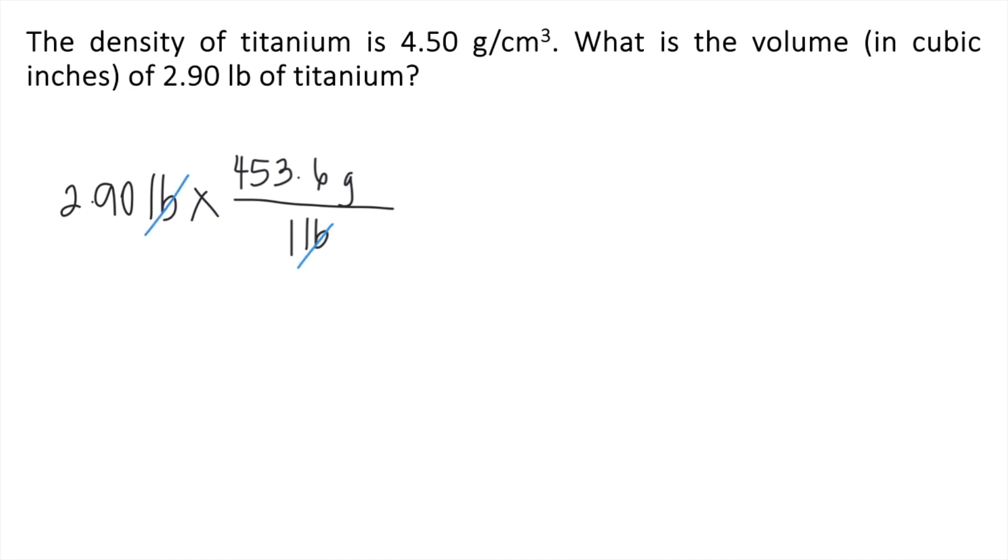Now you have grams. And in the problem, we are given the density of titanium. It says here 4.50 grams per cubic centimeter. That means for every 1 cubic centimeter, there's 4.50 grams of titanium.